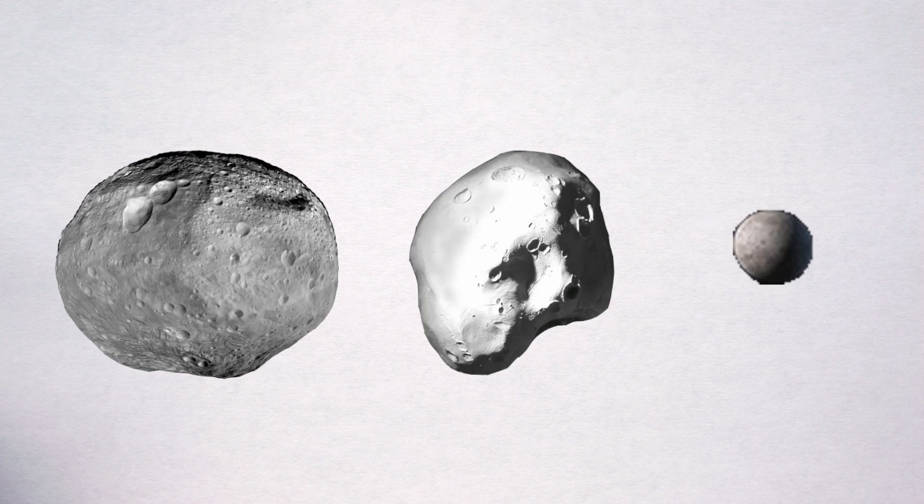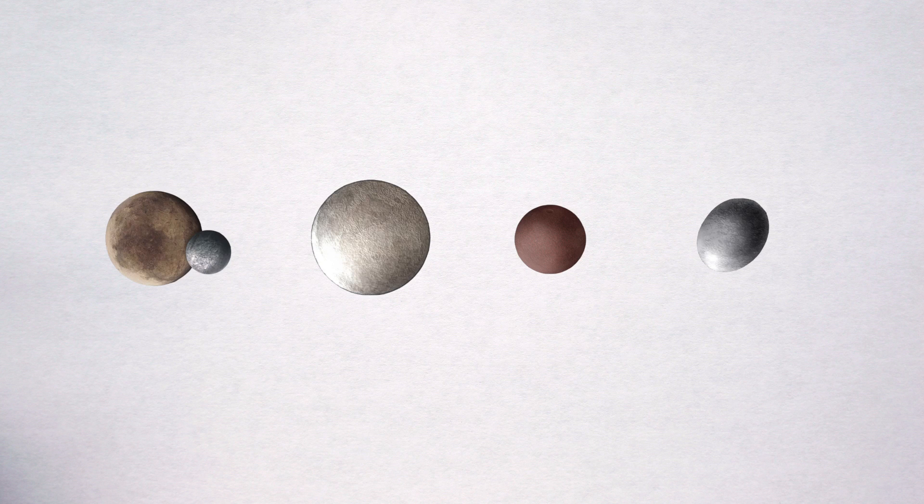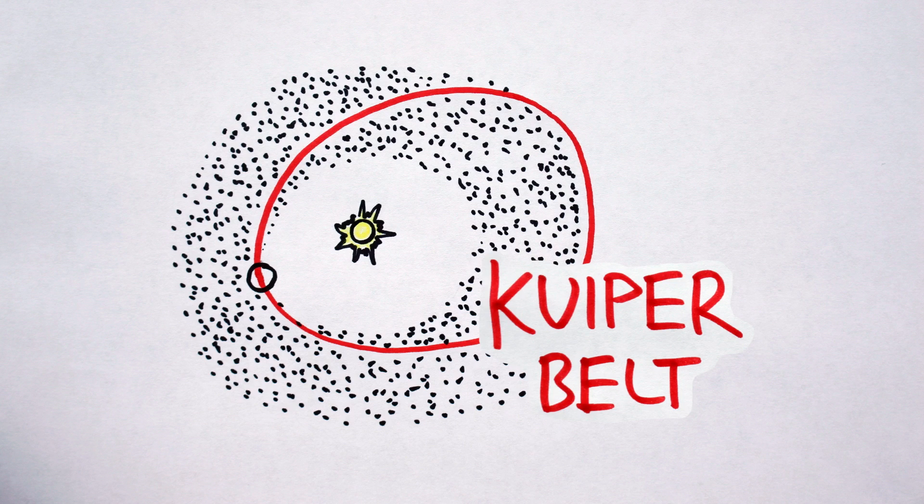So, just as Pallas, Juno, and Vesta were reclassified as asteroids in the asteroid belt, the IAU in 2006 reclassified Pluto, Eris, and the myriad of other trans-Neptunian objects as dwarf planets in the Kuiper Belt. That aforementioned region of space bounded by Pluto's orbit.